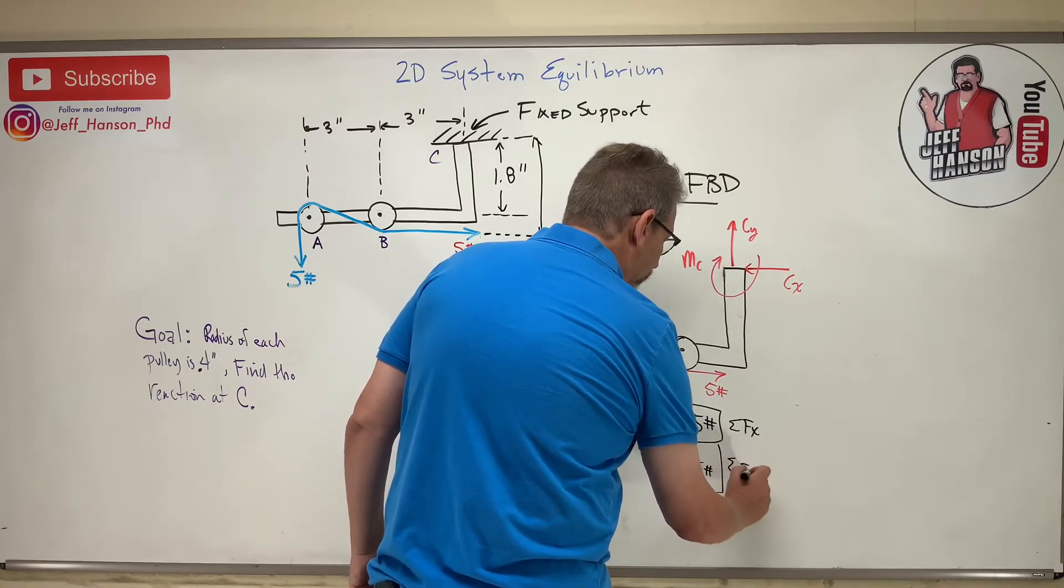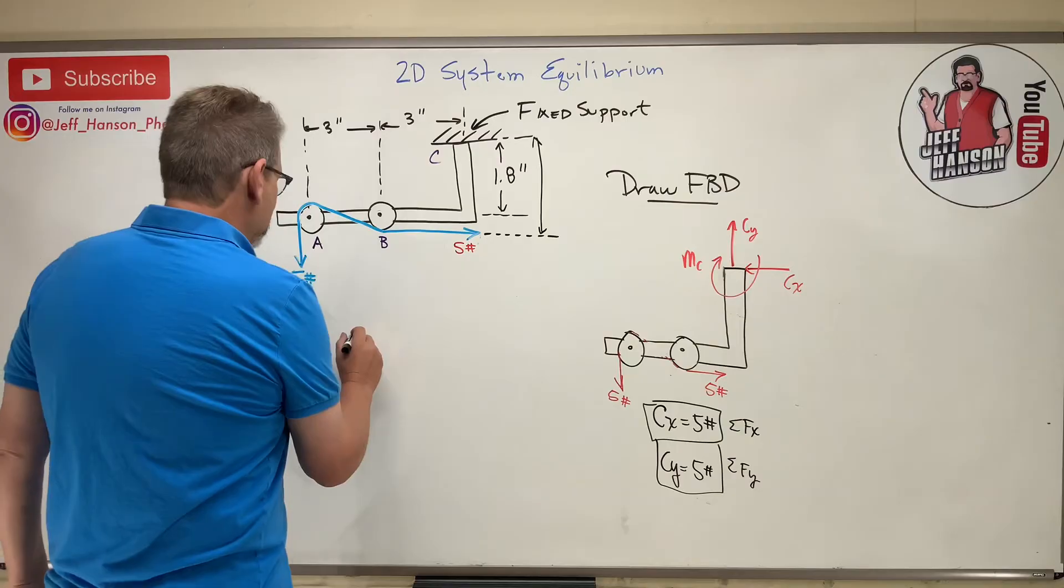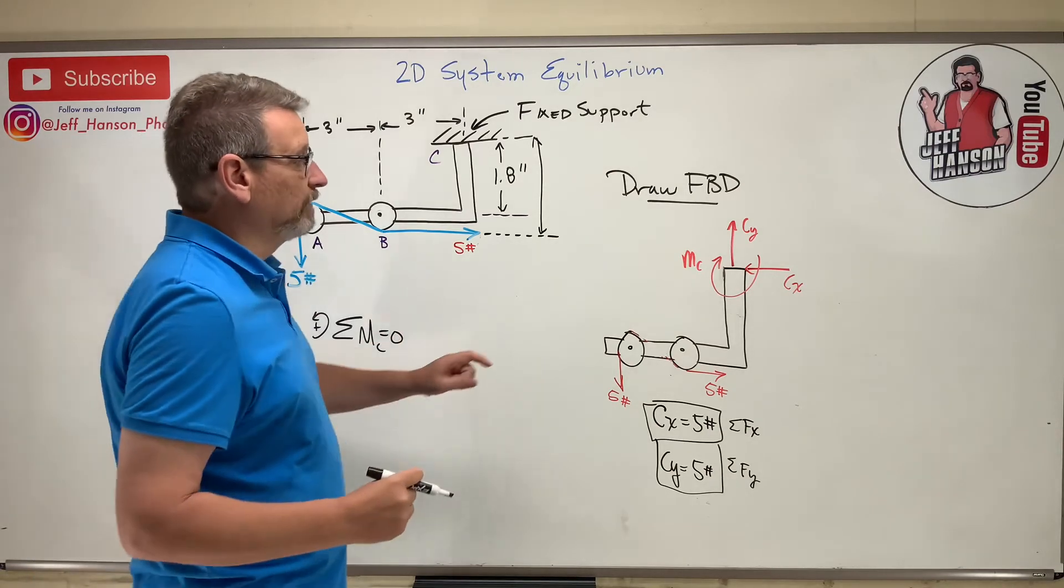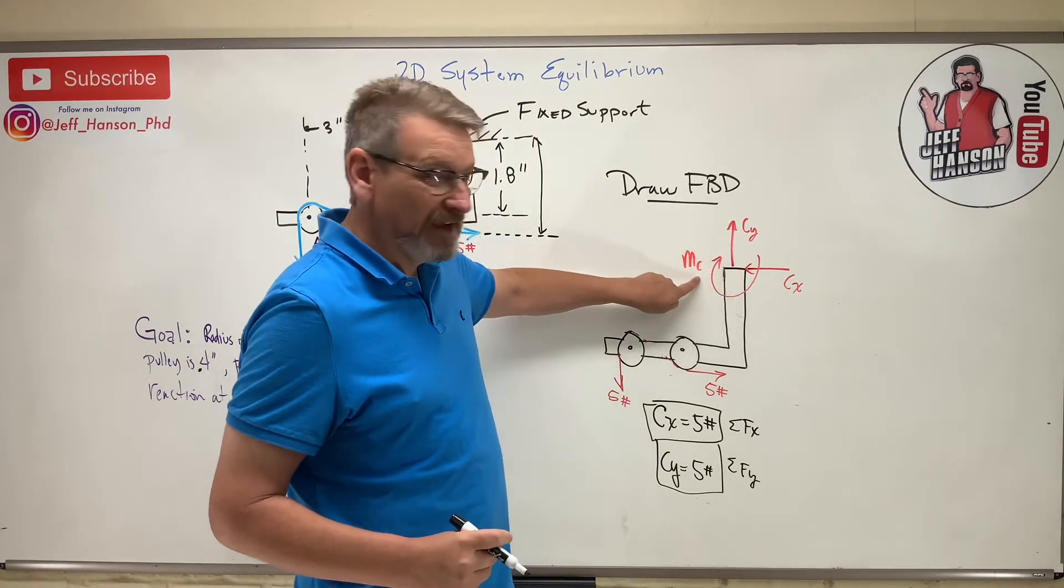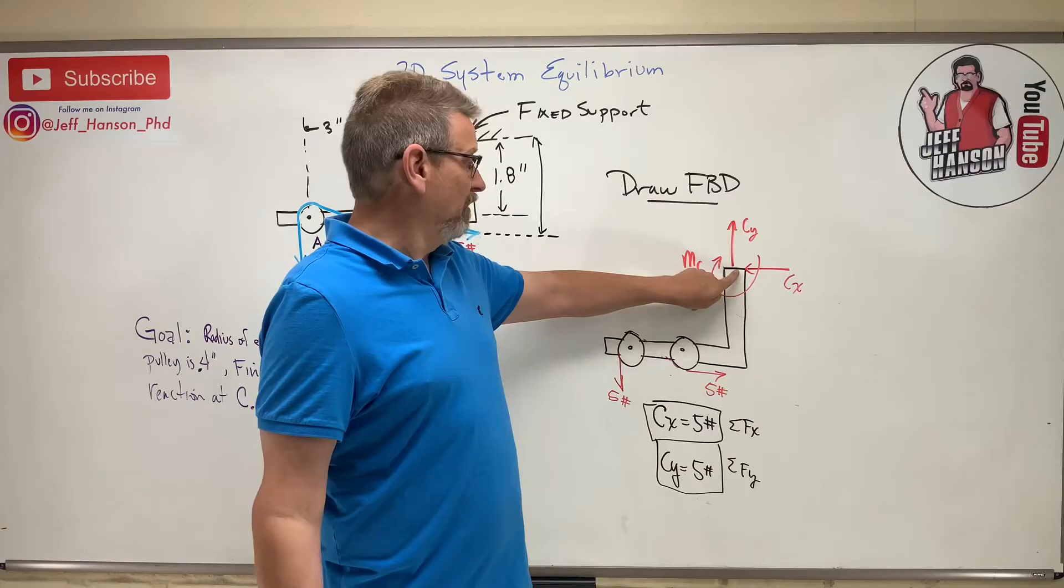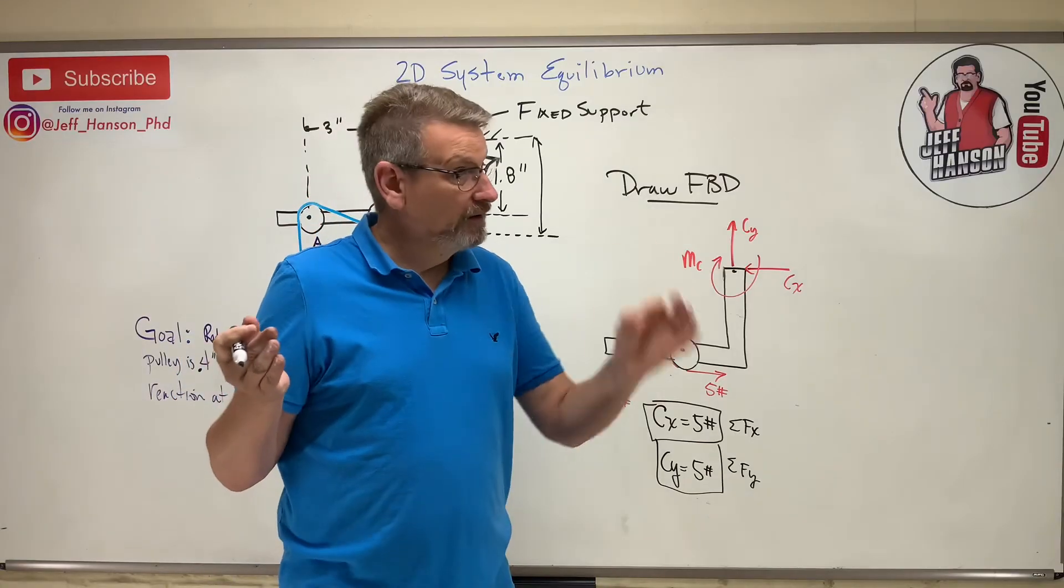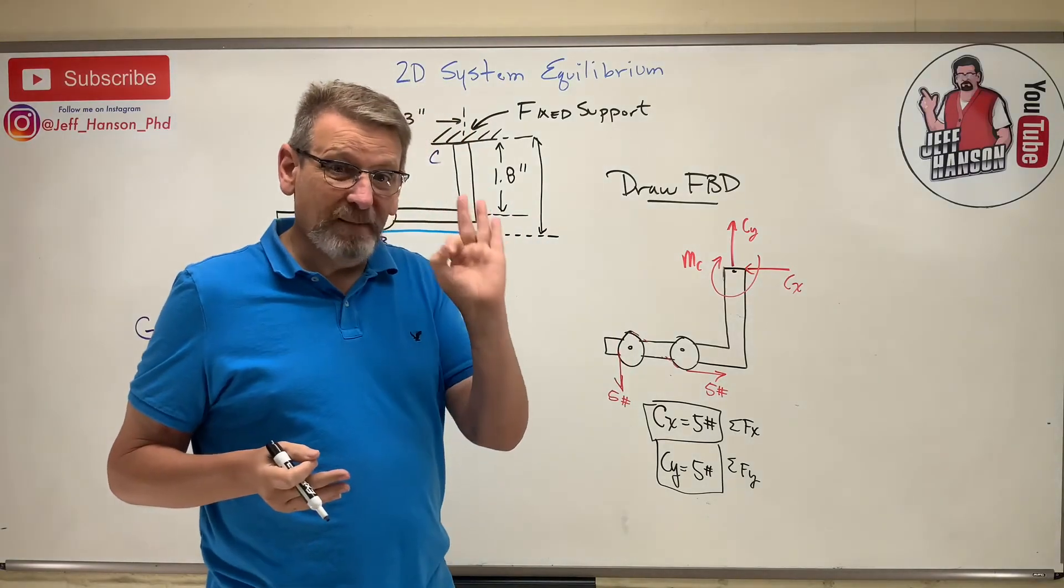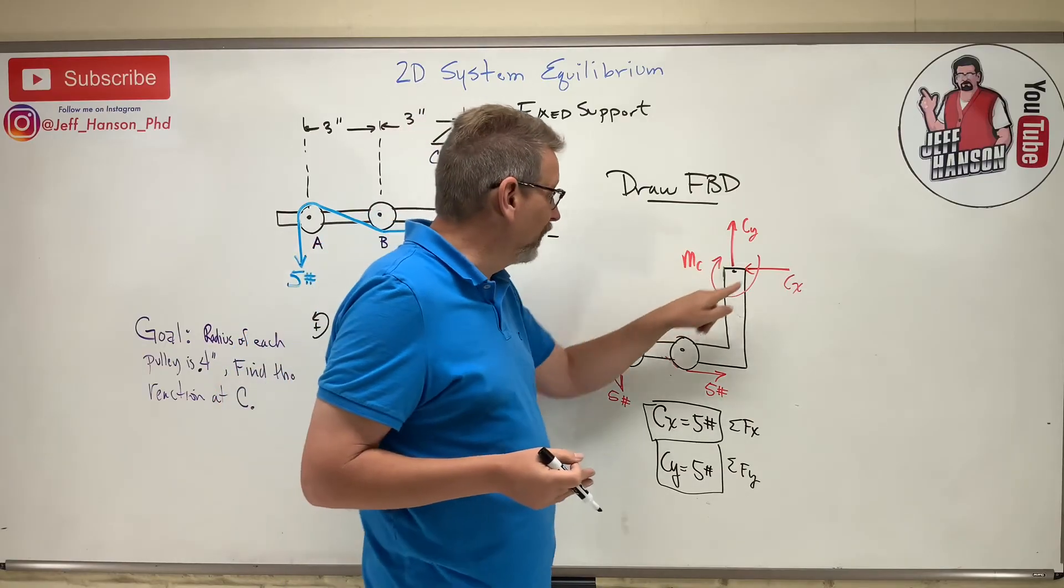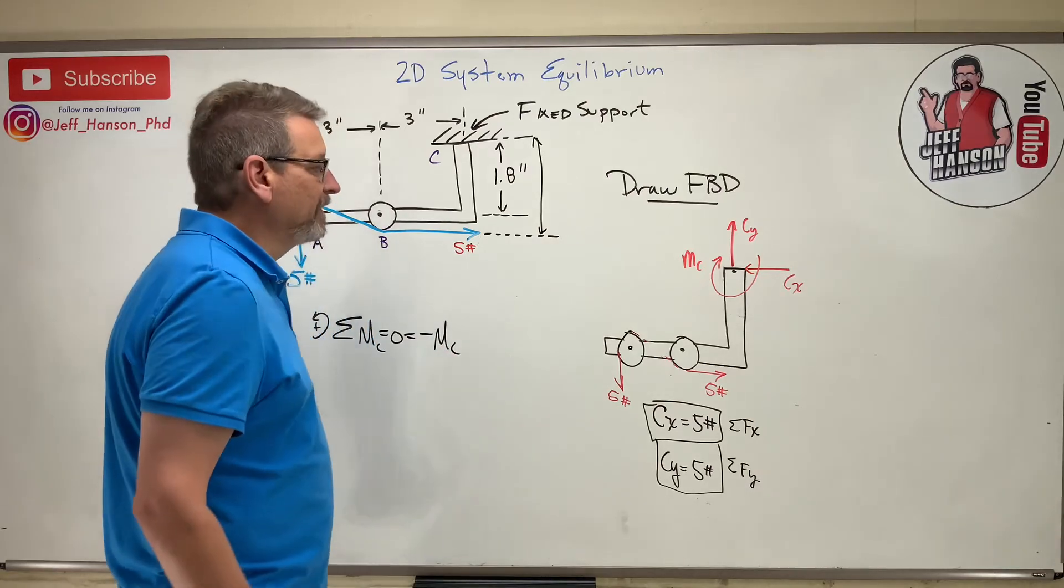Now here's the question: how do we find Mc? He's fun to have at a party - he's MC. How do you find that guy? Well, we can take the moment at C, but if we take the moment at C won't it knock Mc out? No. You don't knock moments out. Why don't you knock moments out? Why do you knock forces out? Because what's the perpendicular distance from that force to that point? It's zero. The reason you knock them out is because the distance is zero, but moments already have the distance in there, so you can't knock that guy out.